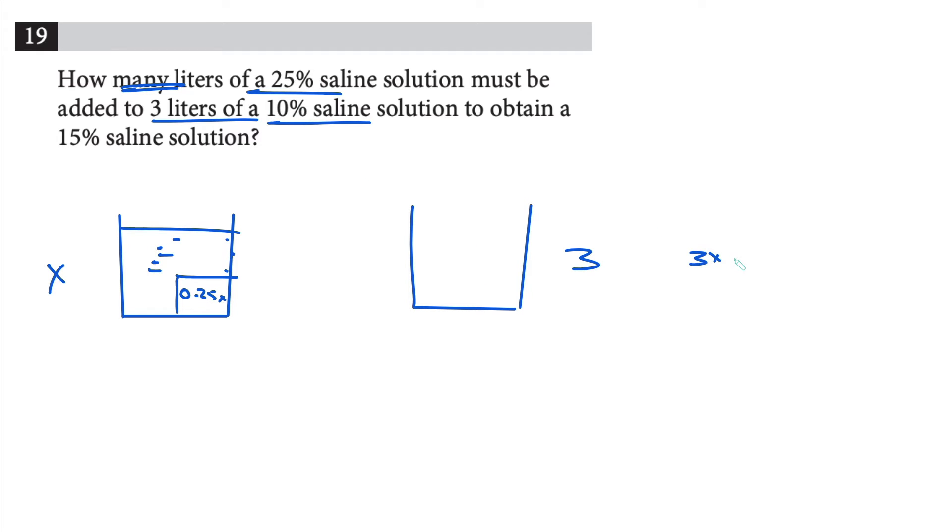And 10% of it, so three times 0.1 which gives you 0.3. So that's going to be 0.3 amount of salt. Remember, the 10% saline solution means 10% of that amount is going to be salt, right? So because 10% of three is 0.3, so 0.3 is your saline solution here. 0.25 of x is going to be your salt over here.